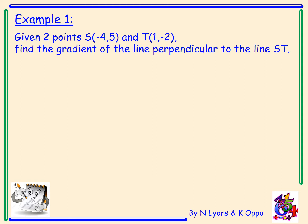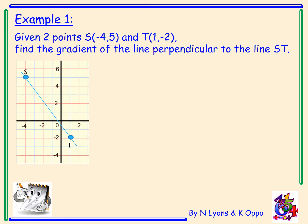Example one. Given two points. Point s minus four five and the point t one minus two. Find the gradient of the line perpendicular to the line st. It's always useful to draw the problem out so you can visualize it and just to aid problem solving. So I've got the point s minus four five and the point t one minus two as shown in my diagram. Now just by visualizing it I can see that that has a negative gradient.